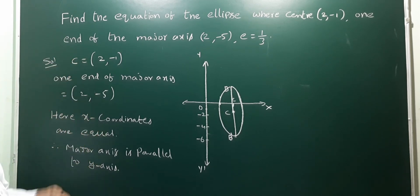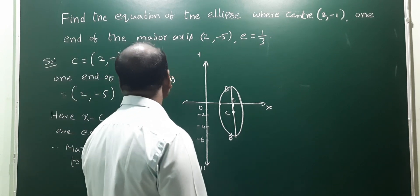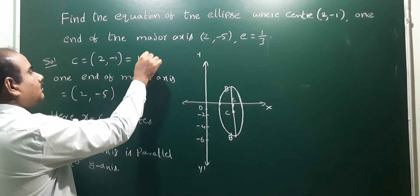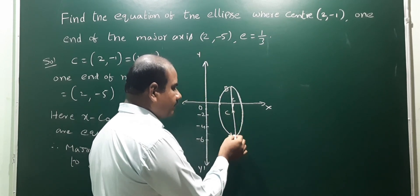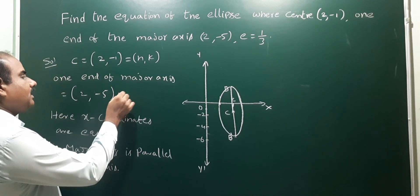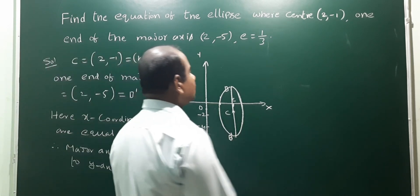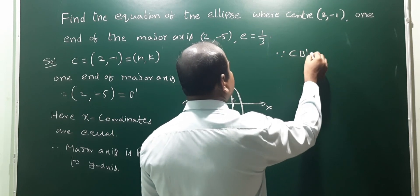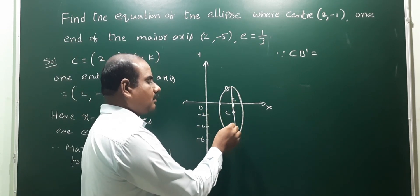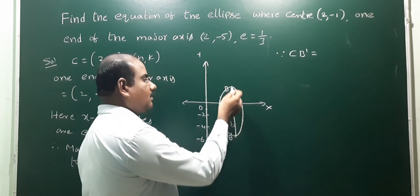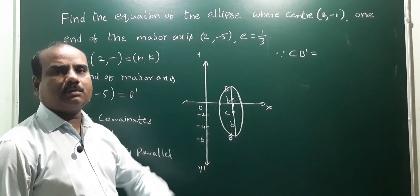Since x-coordinates are the same, the major axis is parallel to the y-axis. For an ellipse with major axis parallel to the y-axis, the length of the major axis is equal to 2b.